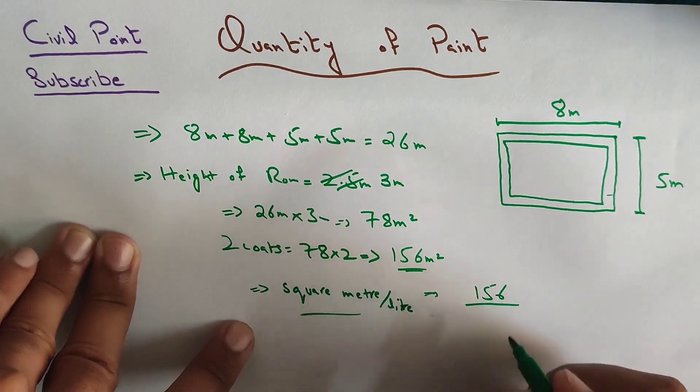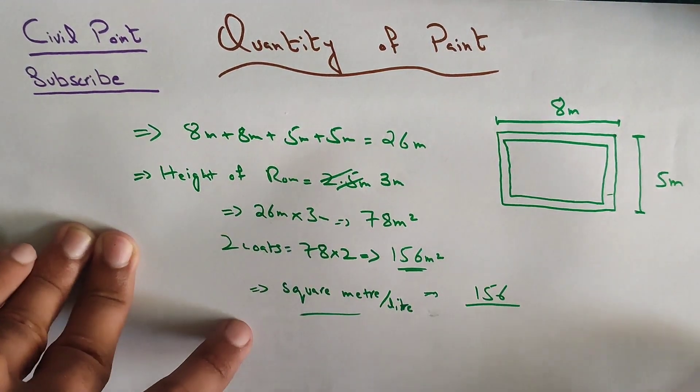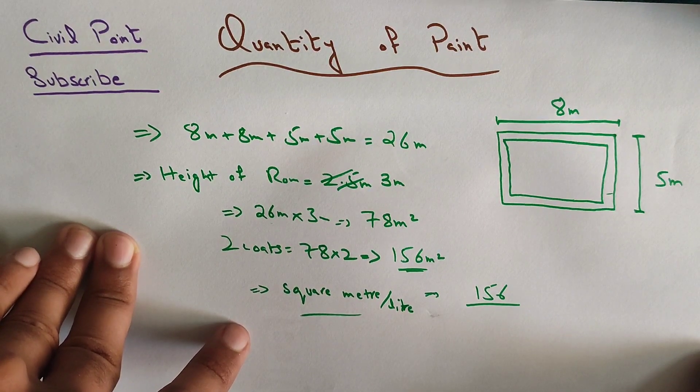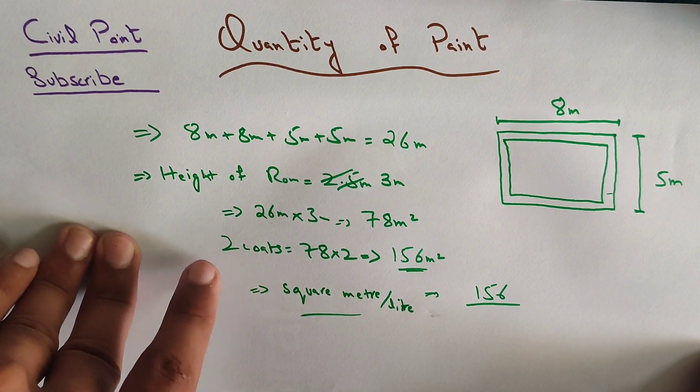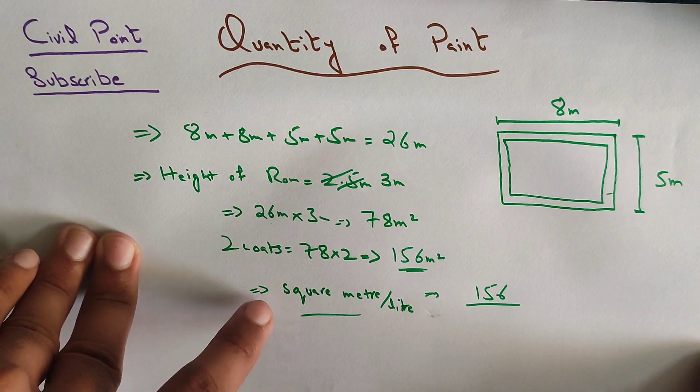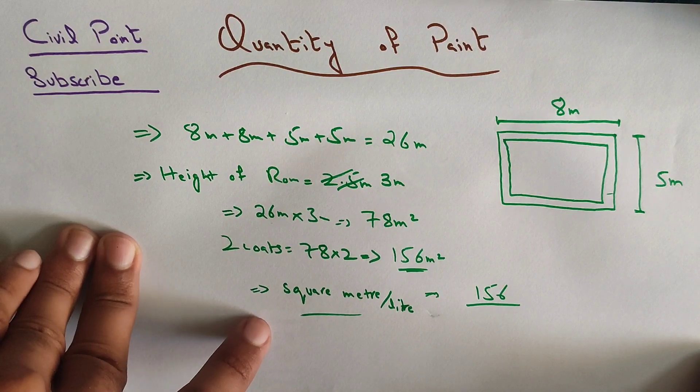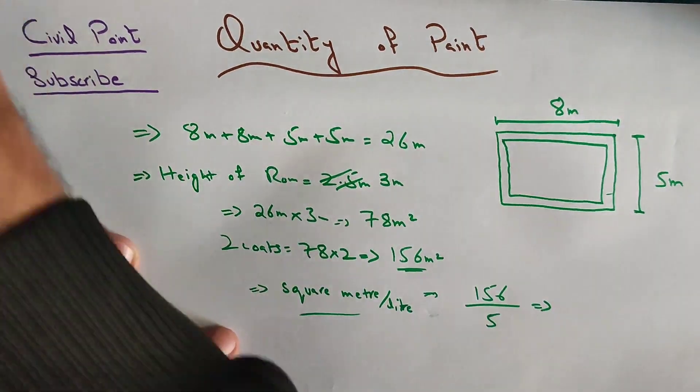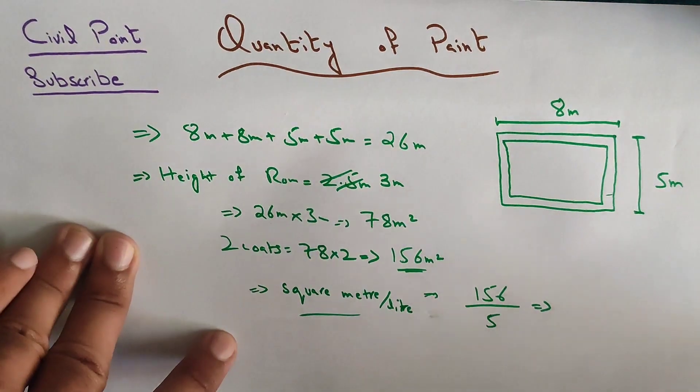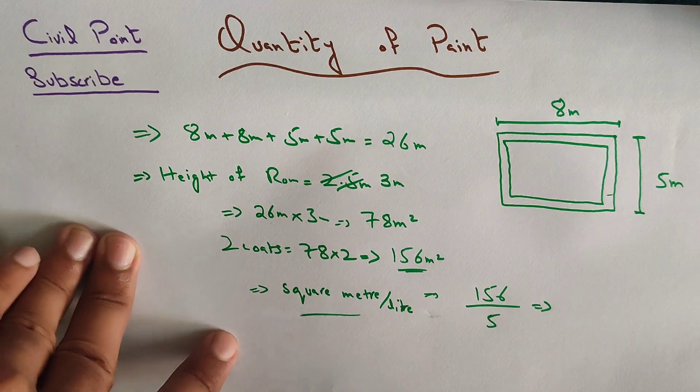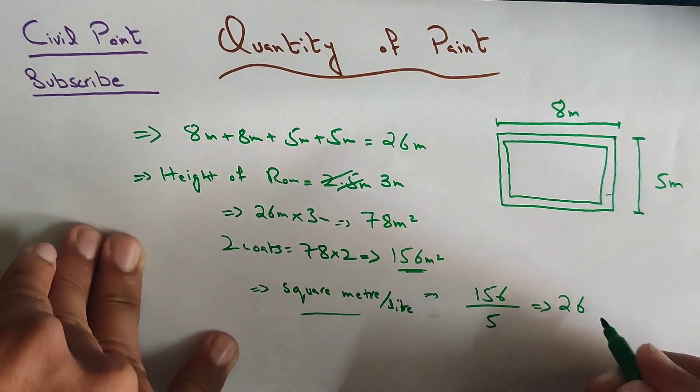Simply you will have to divide with this value. Let's suppose our distributor gives us the value of 5 square meters per liter, meaning one liter will cover 5 square meters of the wall or ceiling. So we will divide 156 divided by 6, which will be 26.